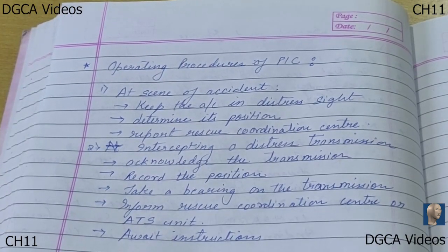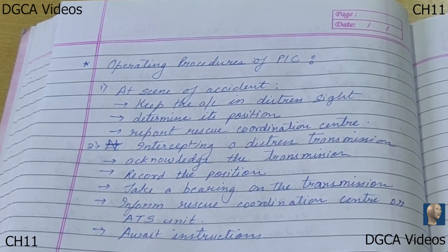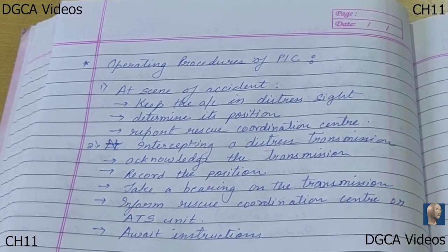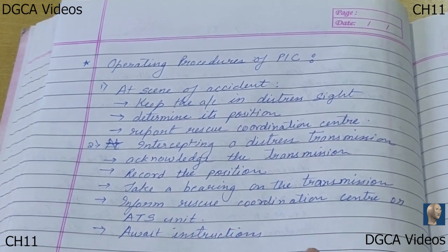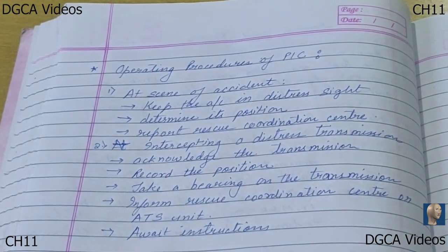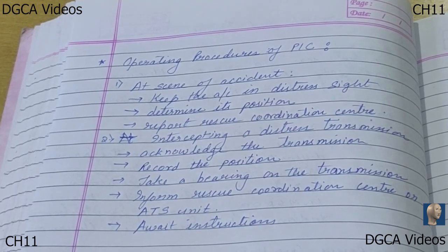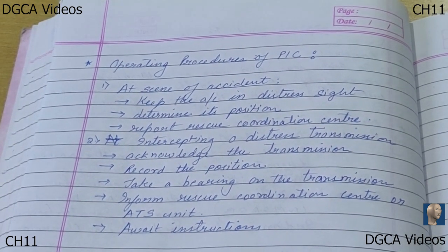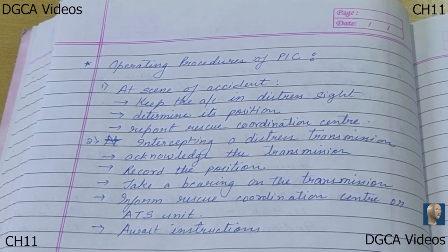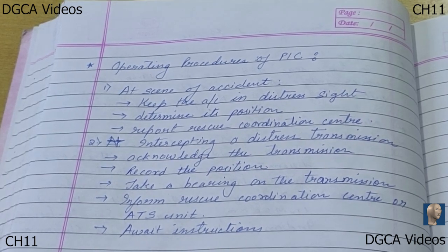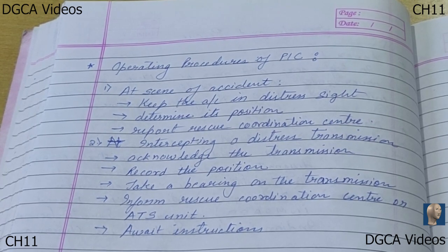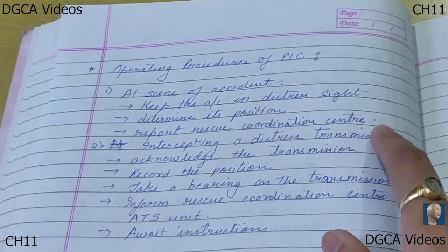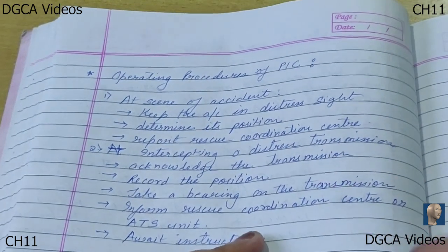There are certain operating procedures for the pilot in command at the scene of an accident. If they observe an aircraft in distress or any situation of urgency or distress, the pilot in command must keep the aircraft in distress in sight until asked to leave or told no further assistance is needed. They must determine their position and transmit it, and also report to the appropriate rescue coordination center as well as the ATS unit.